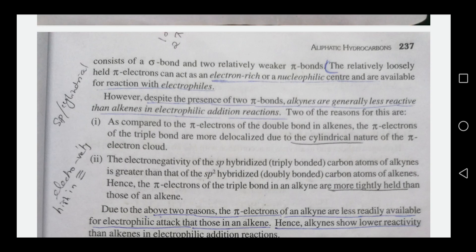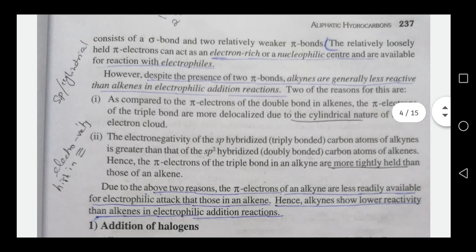In the presence of two pi bonds, alkynes are generally less reactive than alkenes in electrophilic addition reactions. There are two reasons for this. First reason: the pi electrons of the triple bond are more delocalized than those of alkenes, due to the cylindrical nature of the pi electron cloud in the triple bond.